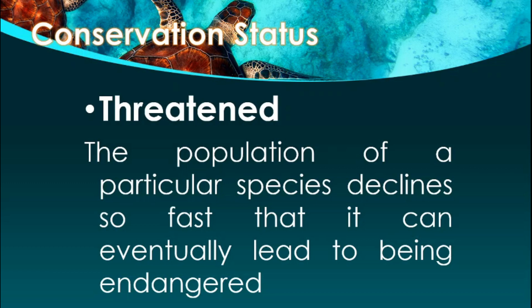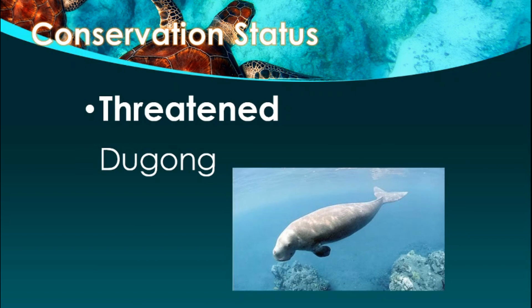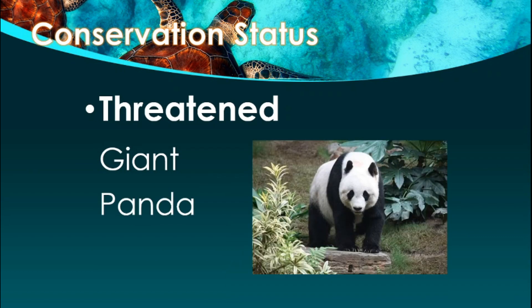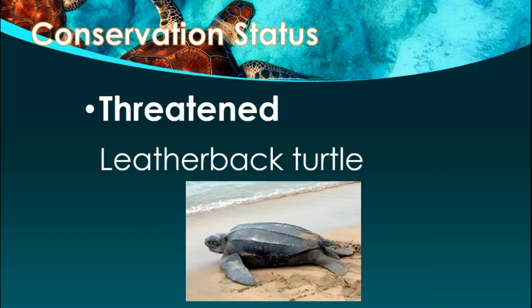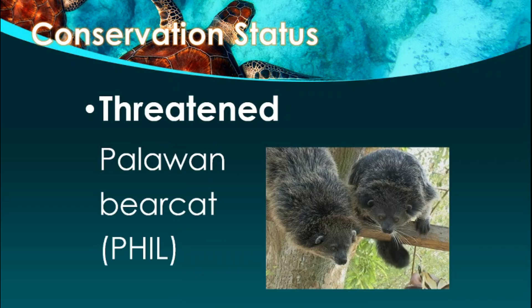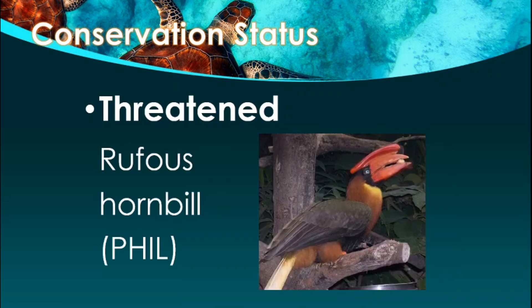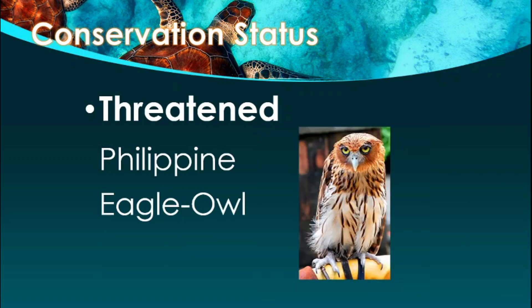The following slides will show examples of animals classified under threatened. We have the dugong, the giant panda, the polar bear, and the leatherback turtle. Now in the Philippines, we have the Palawan bearcat, the rufous hornbill, also known as kalao, and the Philippine eagle owl.